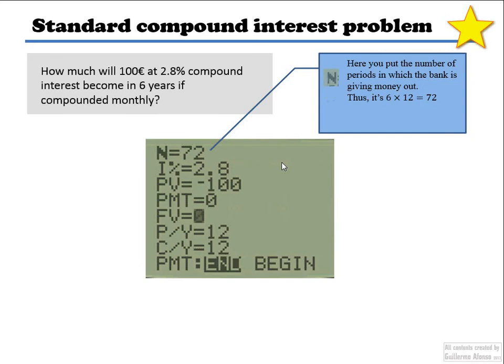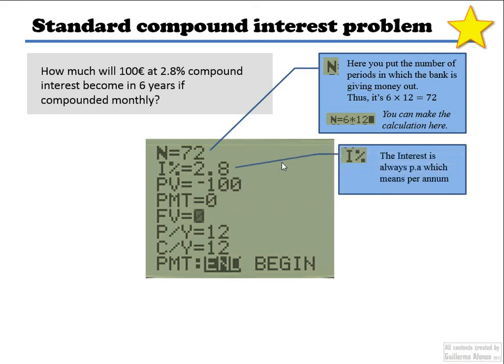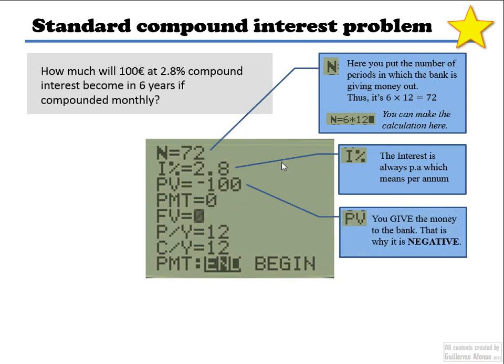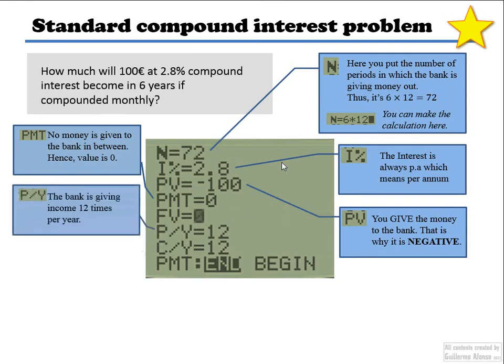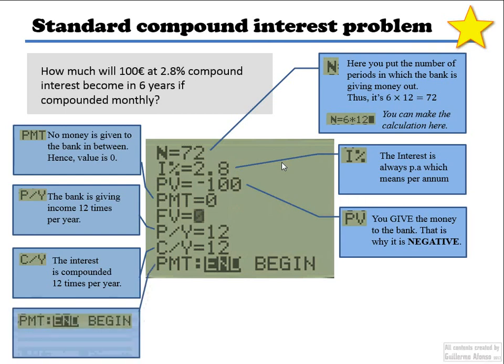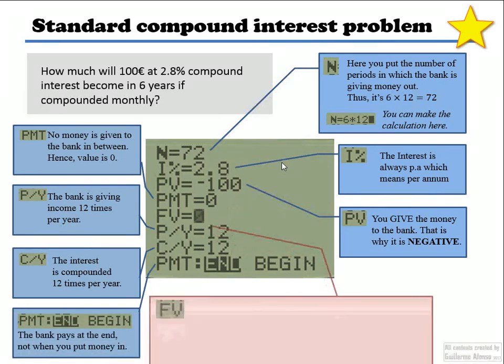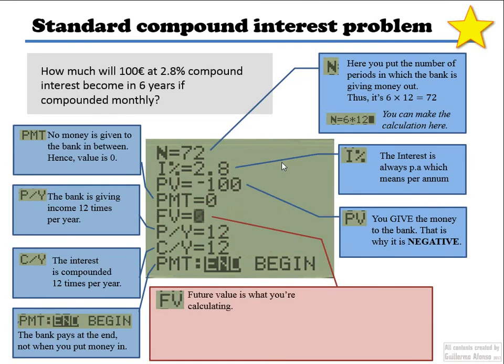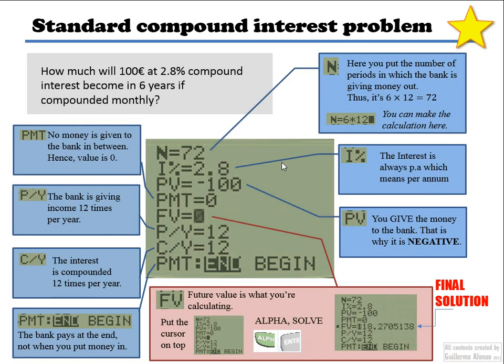This is the final screen that I get. So here I'm going to put the number of periods. It's going to be 72, which is six times 12. Remember, it's not the number of years. The interest is always the interest per annum. Present value goes negative because I'm giving the money to the bank. There's no payments done in between. I'm not putting another hundred in or anything like that. Payment per year is 12 payments the bank is making. The interest is compounded 12 times per year. And the PMT, the option in the end, is always pretty much going to leave end. And it's because the bank is giving the money afterwards, not giving the money straight at the beginning. And you press alpha solve on future value. And that's how you get the final solution.